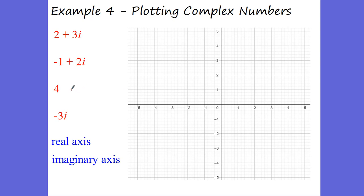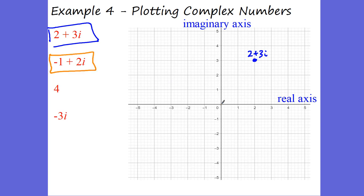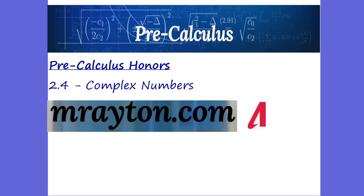One last thing: how do we plot complex numbers? The real axis is our x-axis, and the imaginary axis is our y-axis. So for 2 plus 3i, we go 2 in the real direction and 3 high in the imaginary — that's 2 plus 3i right there. For negative 1 plus 2i, we go negative 1 in the real and positive 2i in the imaginary. For just 4, that's only a real number, so we go to 4. And for negative 3i, we go negative 3 on the imaginary scale. Really easy for plotting complex numbers, and that is complex numbers.